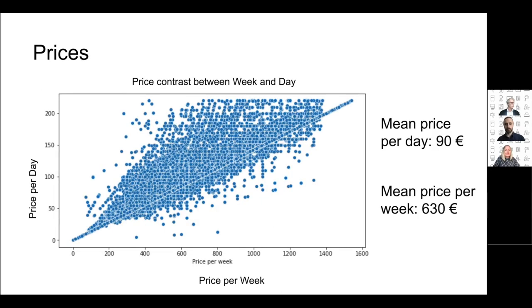In the price data, we had both price per day and price per week. Where one value was missing, we filled it in with a multiplication or division by seven. The data shows that most homeowners give a discount when guests book for a week versus single days. Overall, the mean price per day was 90 euros and the mean price per week was 630 euros.